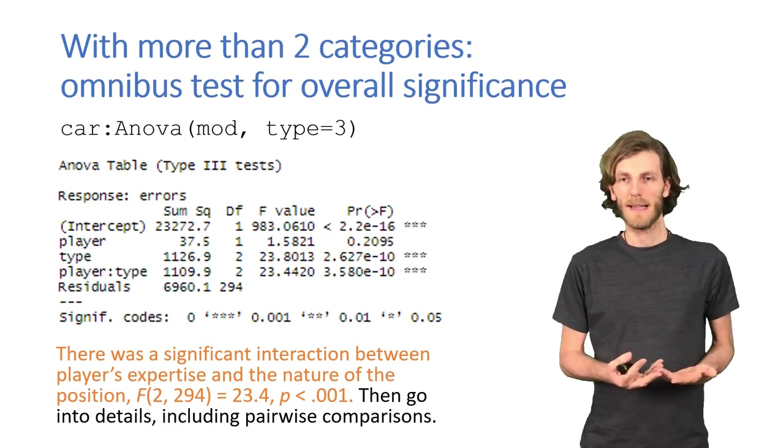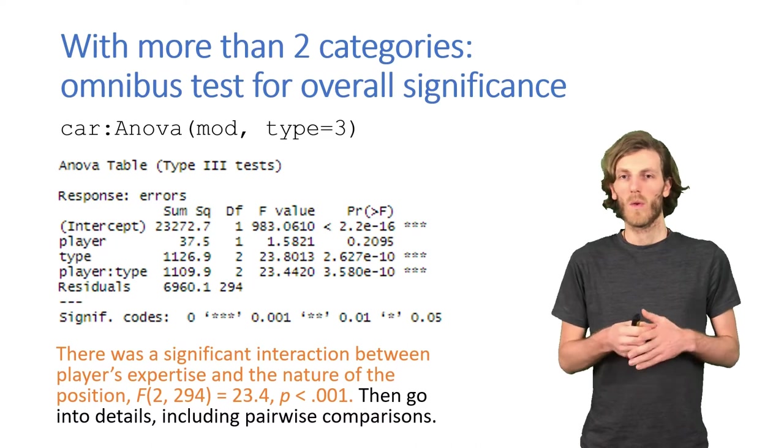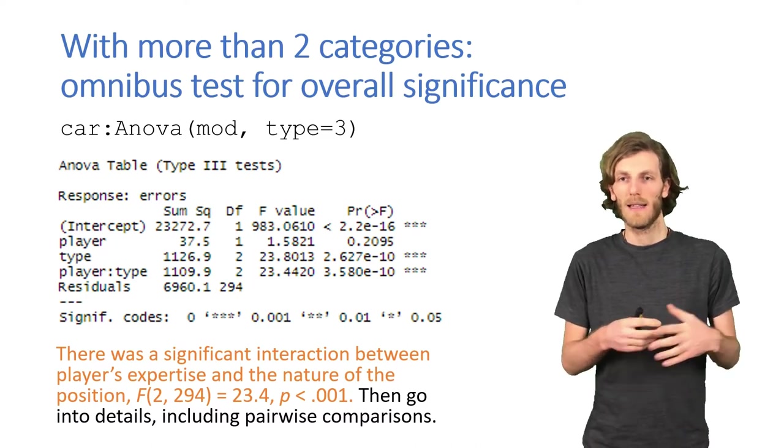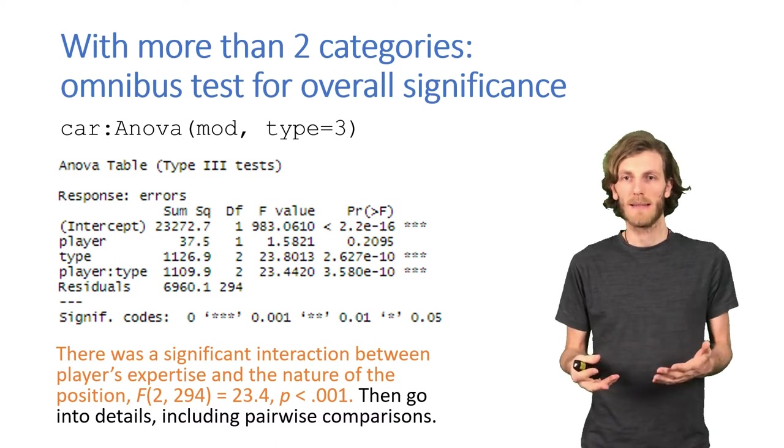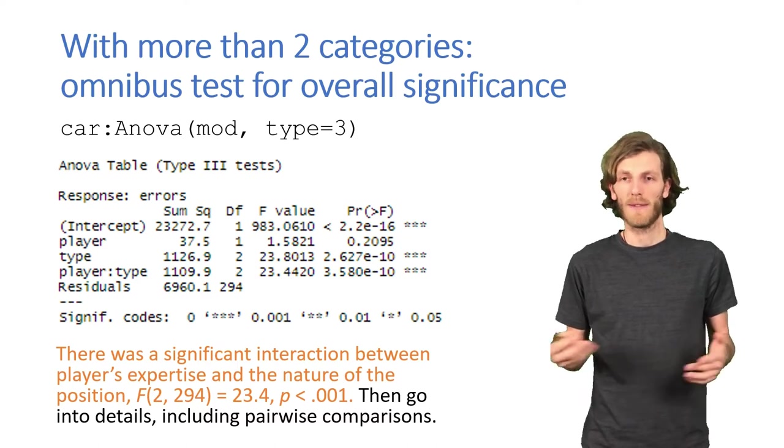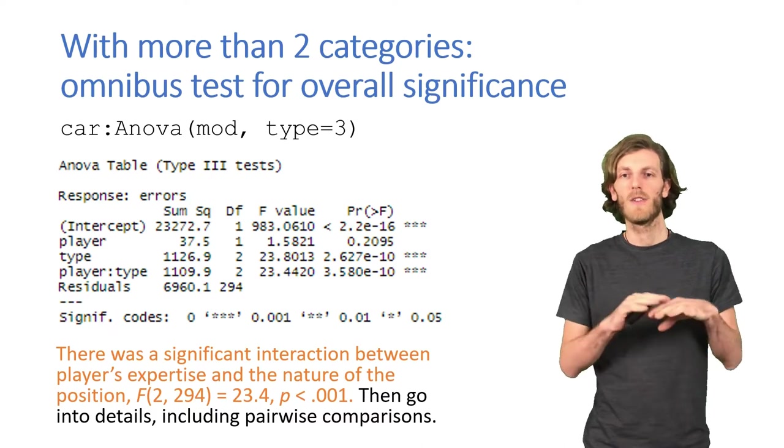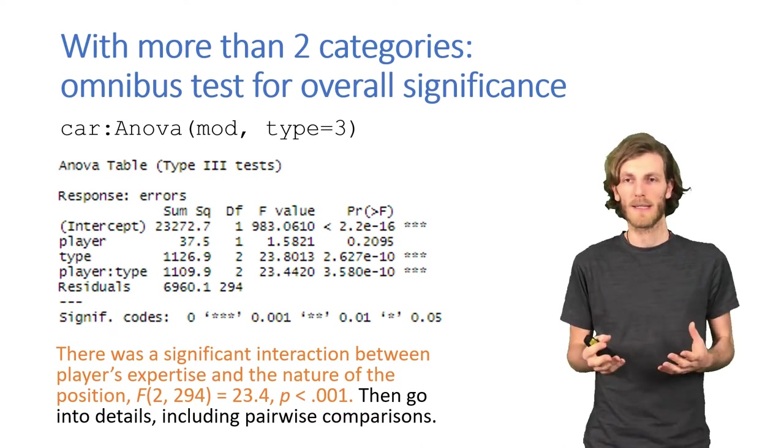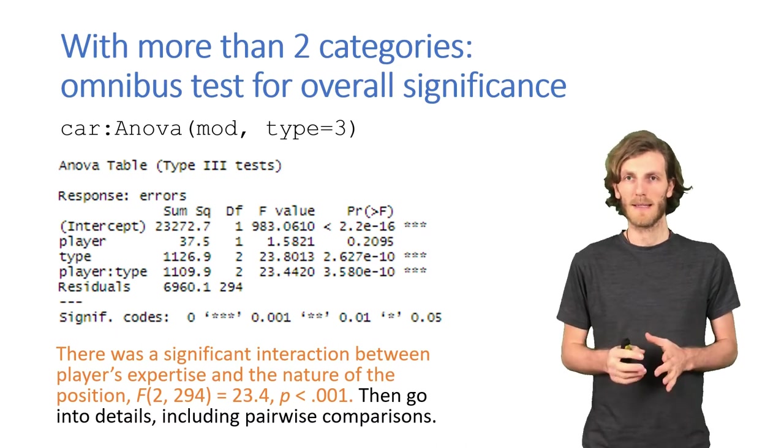Sometimes that might be essential if we're interested in whether some association between two variables is moderated by the state in the US, looking at electoral primaries for example. We would have 50 interaction terms. So clearly it makes sense to first ask, do they collectively contribute something? And then go into the details. That's what the omnibus test is about.